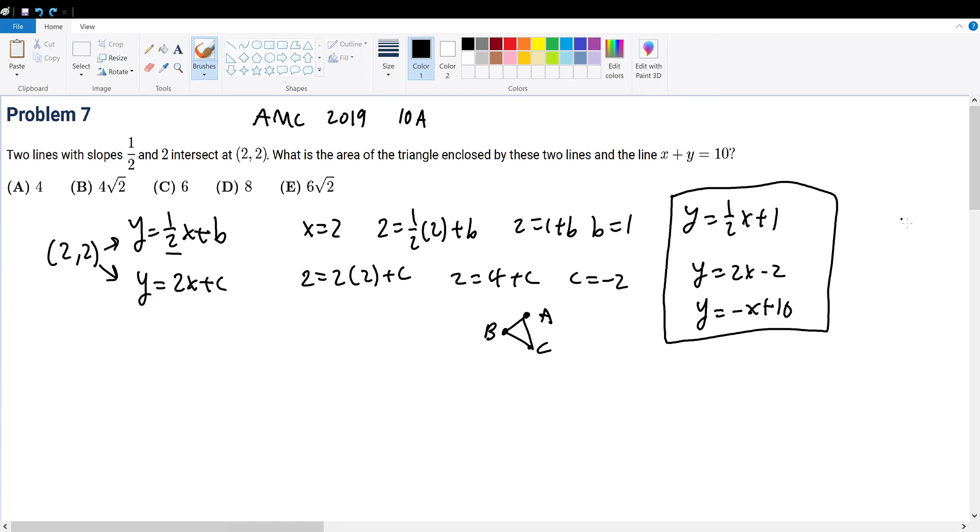So let's continue on with this question. We know that this line and this line intercept at the point (2,2). We already have our first point down.